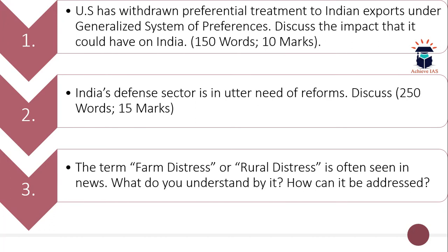For students who are seeing my video for the first time, I will explain what this initiative is — but I will do that at the end. First, let me read the questions of today. The first question is: the US has withdrawn preferential treatment to Indian exports under the Generalized System of Preferences — discuss the impact that it could have on India and the world. Word limit is 150 and maximum marks are 10.